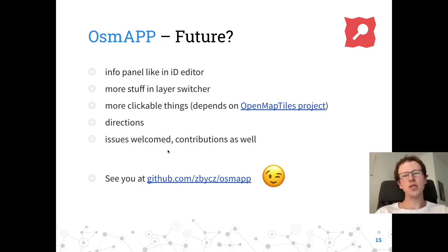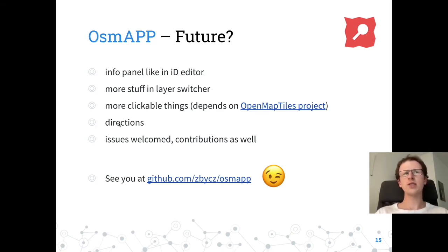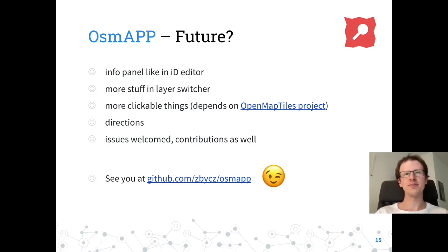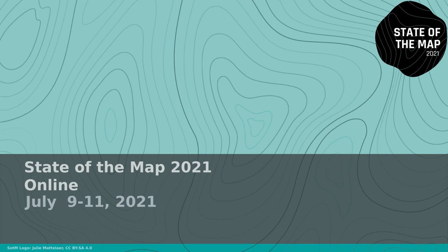So far the target audience is mappers who want to use their data on PC, but I would also like to bring it closer to ordinary users. Particularly it will be necessary to rework the info panel, similarly to how iD Editor does. In the next version I also want to enhance the layer switcher, add more clickable things, add directions, and of course all contributions, ideas, and issues are welcomed. As you probably know, the community has great power. Thank you for your attention.